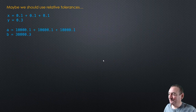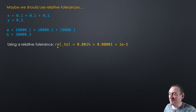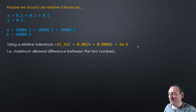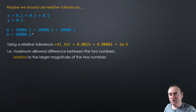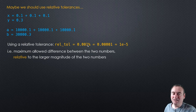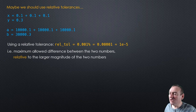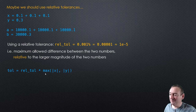So let's take a look at that example again — the same two examples. Let's say we specify a relative tolerance of some percentage: 0.001%, which is 10 to the negative 5. In other words, that's the maximum allowed difference between the two numbers, but relative to the larger magnitude of the two numbers. So we're going to calculate an absolute tolerance, but it's going to be based on the magnitude of the numbers we're looking at. We'll look at the larger of the two numbers and calculate what it means to be within 0.001% of the larger of the two numbers.